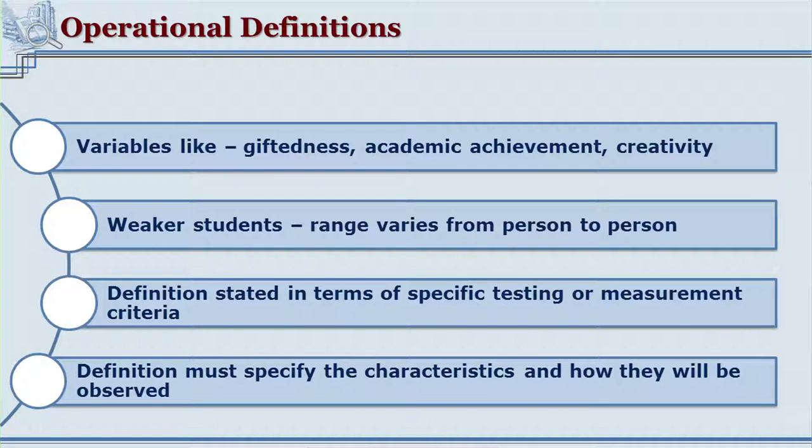In order to have a common understanding of the terminology giftedness, the researcher needs to operationally define the term for that particular research. If the researcher has decided that all students scoring above 97 up to 100 will be termed gifted, then readers must also understand giftedness within that frame. Similarly, a terminology like 'weaker students' in a title also needs to be operationally defined, as its meaning differs from person to person.